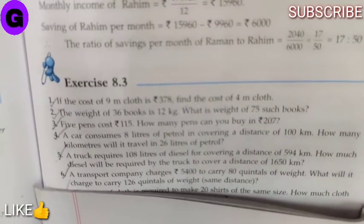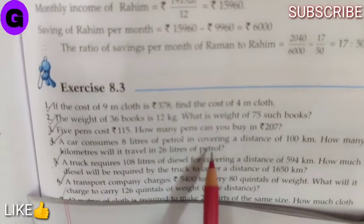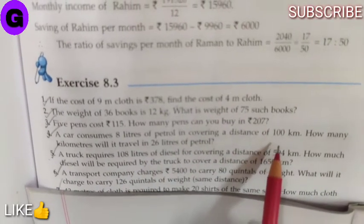Now, sum number 4. A car consumes 8 litre of petrol in covering a distance of 100 km.